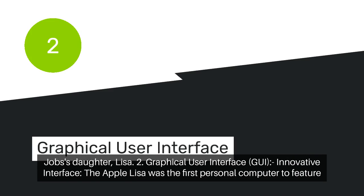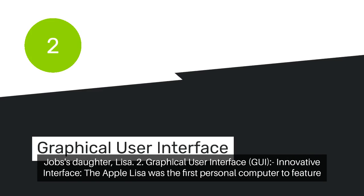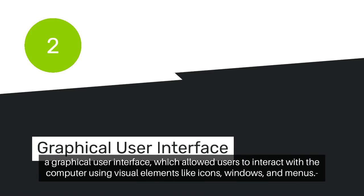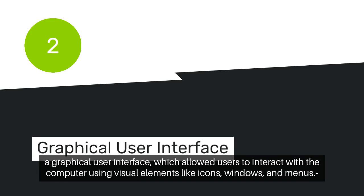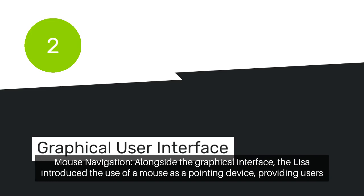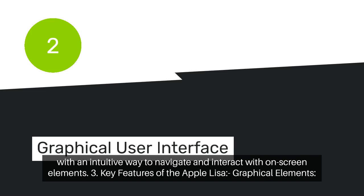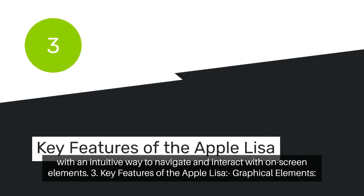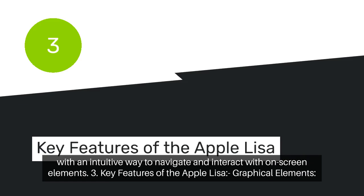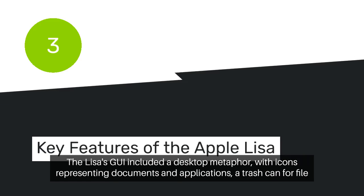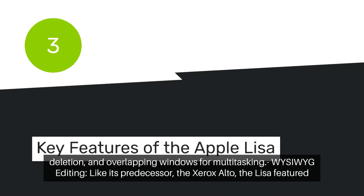Graphical User Interface (GUI): The Apple Lisa was the first personal computer to feature a graphical user interface, which allowed users to interact with the computer using visual elements like icons, windows, and menus. Alongside the graphical interface, the Lisa introduced the use of a mouse as a pointing device, providing users with an intuitive way to navigate and interact with on-screen elements. The Lisa's GUI included a desktop metaphor, with icons representing documents and applications, a trash can for file deletion, and overlapping windows for multitasking.